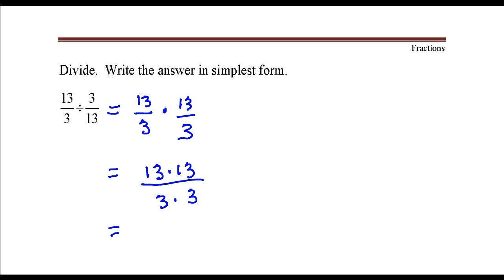There are no factors common to both numerator and denominator here, so we can go ahead and just do the multiplication. 13 times 13, that's 169, and the denominator, 3 times 3, that's 9, and that's our answer.